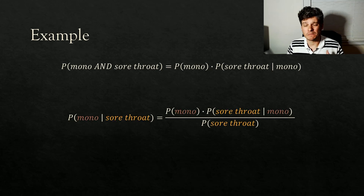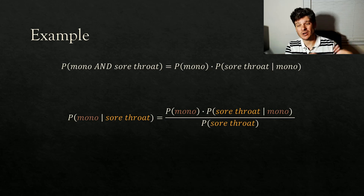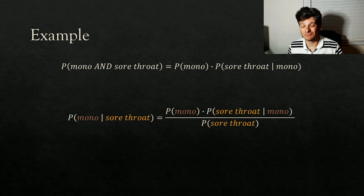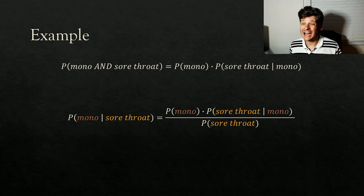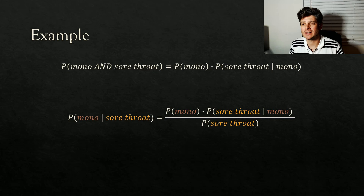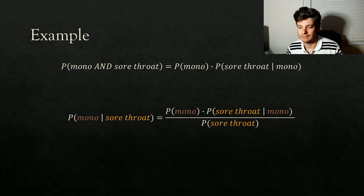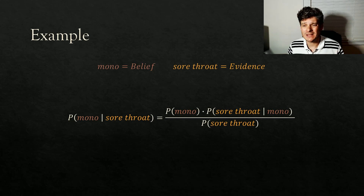To help see this better, I'm going to color code it. We're really talking about two different events: having mono and having a sore throat, and how those two things are related to each other. This formula relates them: the probability that you have mono given you have a sore throat equals the probability of mono times the probability you have a sore throat given you have mono, divided by the probability you have a sore throat.